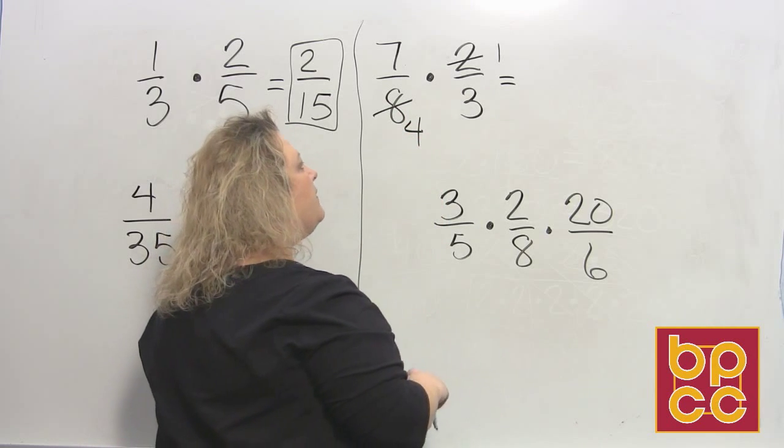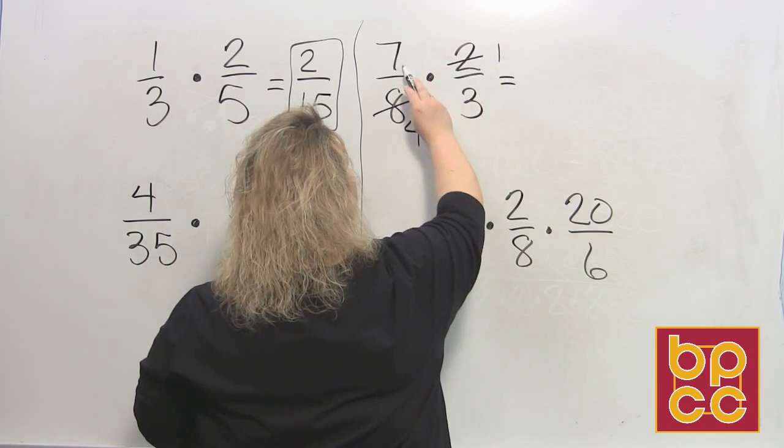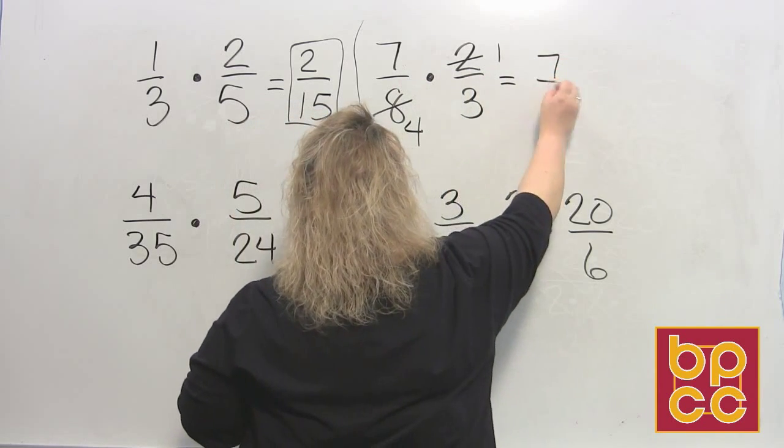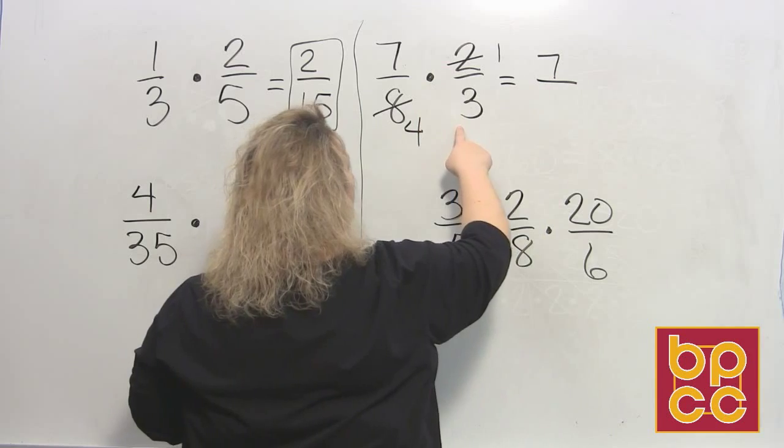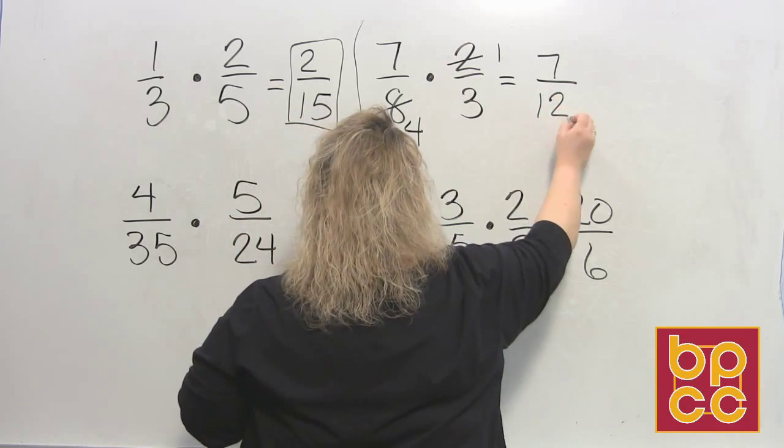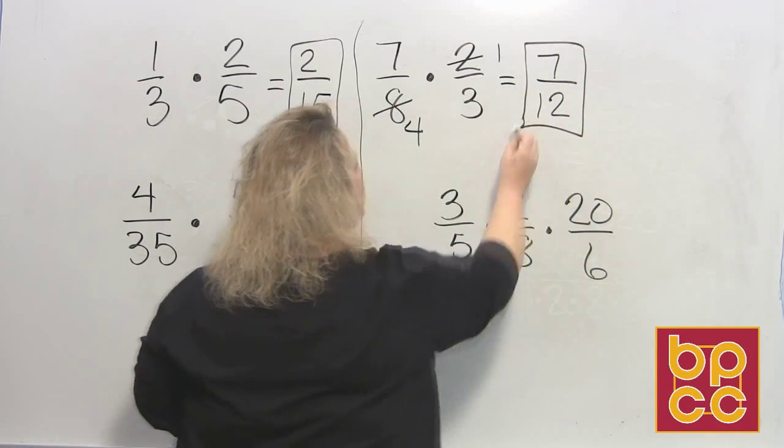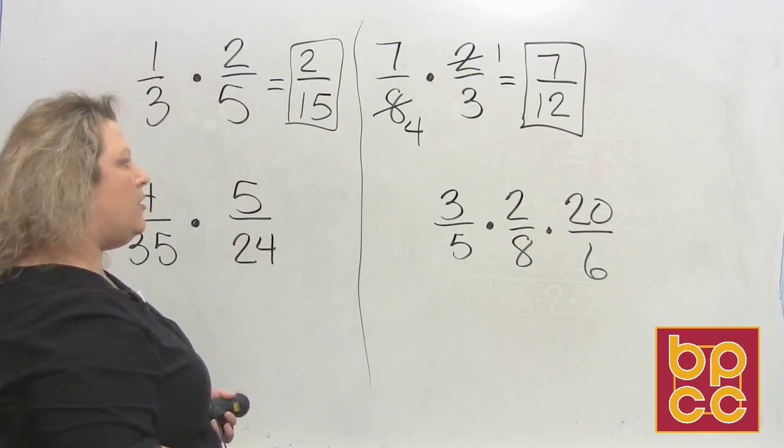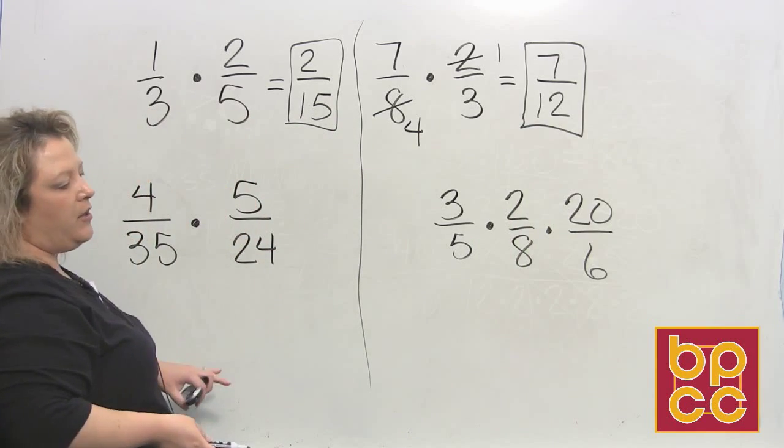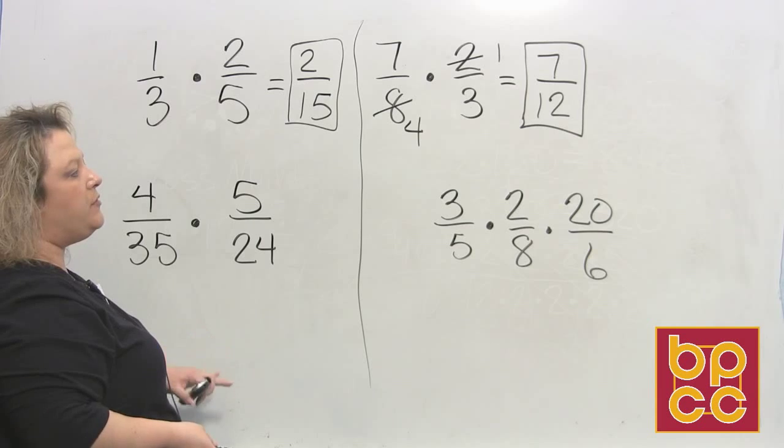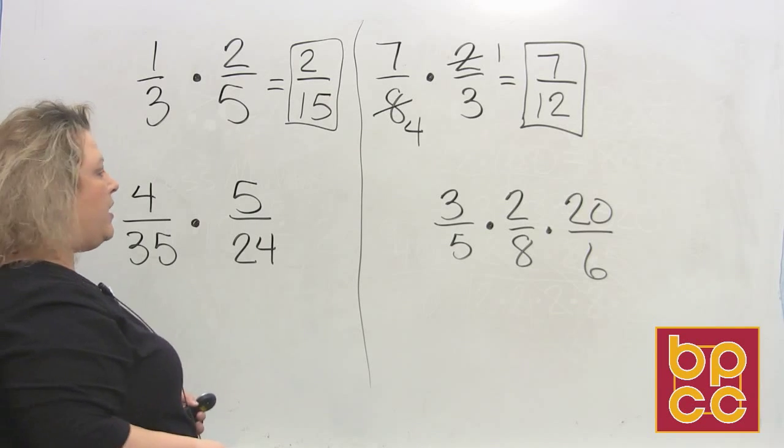Once you've done that, then you do top times top, so that'd be seven times one is seven, and bottom times bottom, four times three would be twelve. Since you reduced it first, that should be in lowest terms. If you went ahead and multiplied across first, you would just have to reduce at the end, which is still okay.